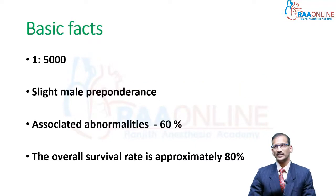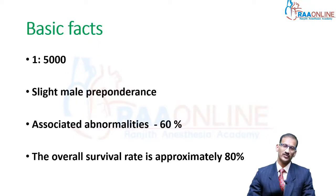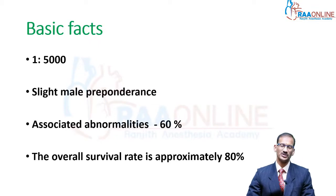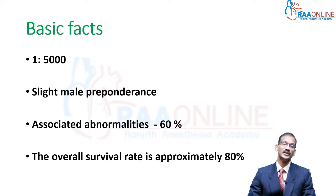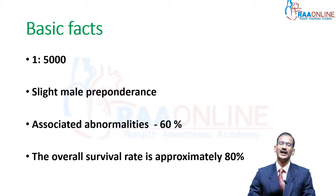Some basic facts about this condition: it occurs at an incidence of 1 in 5000, and has a slightly male preponderance. Importantly, it is associated with other abnormalities in 50 to 60 percent of patients, which determines the prognosis and survival. The average survival rate is around 80 percent.